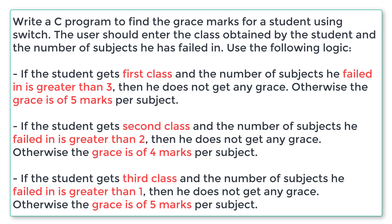The second condition is if the student gets second class and the number of subjects he has failed is greater than two, then he doesn't get any grace; otherwise he will get four marks per subject.